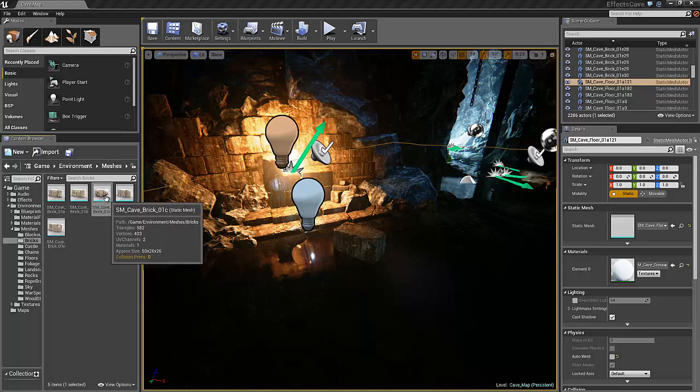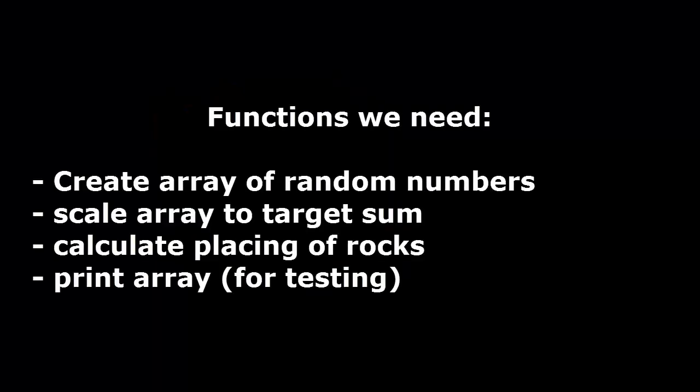The C brick is slightly distorted, so I didn't use that one. To create this random wall, it's useful to create a couple of functions which will make the job a lot easier. First we need a function that creates an array of random numbers — this is used for scaling the rocks and placing them. Next we need a way to scale this array to a target sum, because we don't know the total length if we add up all the scales. Then we need a way to calculate the placing of the rocks, since it's not obvious where to put them to get them beside each other. And lastly we need a way to test that we are doing it correctly, so I'll make a simple function that prints out all the values of the newly created array to the log.